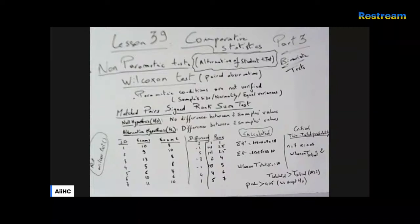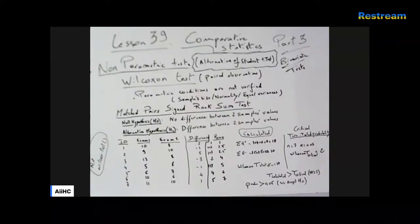This is a paired observations test. We've called it 'dependent' before, but it's not really dependent in that sense. It means you have the same number of observations, and for each subject you repeat, for example, the same test or examination. The observations are related to the ID of the subjects — that is what 'paired observations' means.